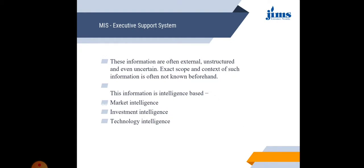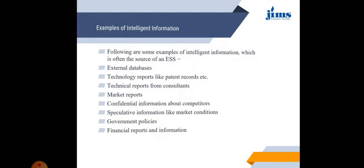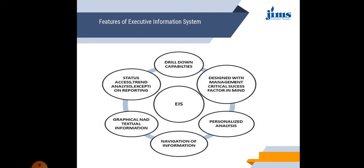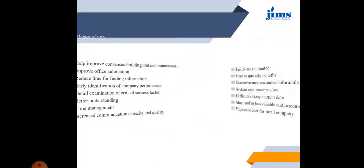There are three types of information intelligence: market intelligence, investment intelligence, and technology intelligence. Examples of intelligent information sources are external databases, patent records, market records, confidential information, government policies, and financial reports. Features of the executive information system include drill-down capabilities, critical success factor design, personalized analysis, navigation of information, graphical and textual information, status access, trend analysis, and exception reporting.